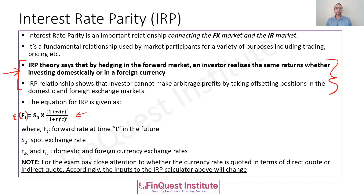In case a question comes up on the exam to calculate IRP, the only thing you need to remember is the way in which the currencies are quoted — whether in a direct quote or an indirect quote. That will only have an impact on the way in which this calculation is going to happen. Otherwise, the IRP calculation is pretty straightforward.